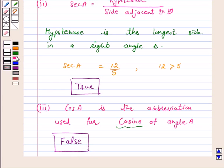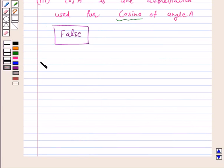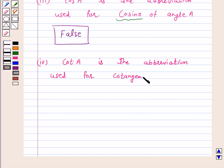Let's move to part 4. CotA is the abbreviation used for cotangent of angle A. It is not the product of cot and A because cot separated from A has no meaning. Hence the answer for the above part is false.